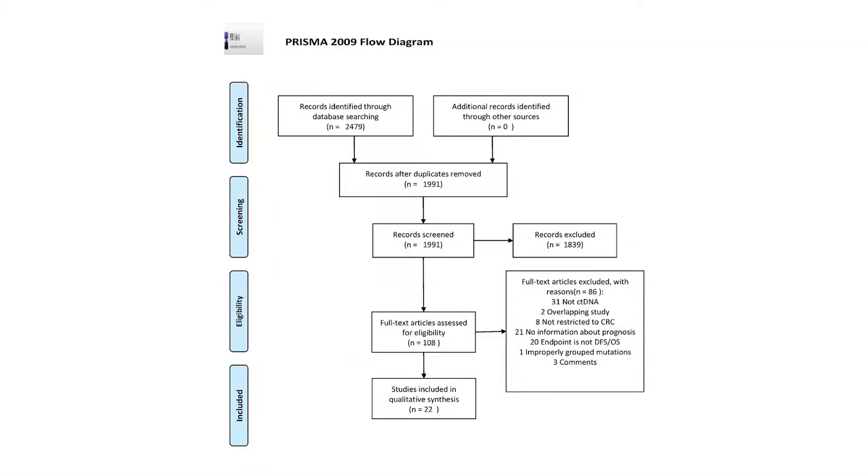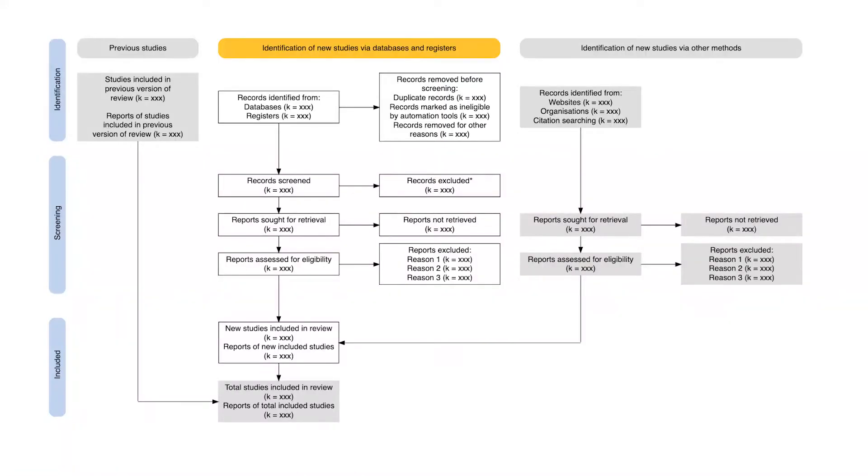PRISMA Flow Diagram 2020 is a little different from PRISMA Flow Diagram 2009. The 2009 diagram looked something like this, and the 2020 diagram looks something like this. In both diagrams, we have the same four sections. We start with Identification, then Screening, then Eligibility, and then Inclusion of the studies. PRISMA Flow Diagram 2020 looks a little more complicated, but don't get scared — I'll make things easier for you. Let's begin with the first section: Identification.